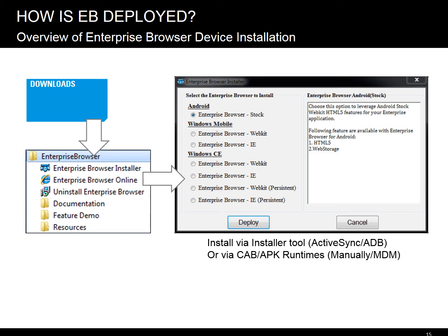For WM/CE, you have an option to install the Lite package that does not include the WebKit engine. This saves some space, which is necessary for older devices. Persistent for CE means that EB will be installed into the backslash application directory, allowing it to survive CE cold boots. Everything else is straightforward.